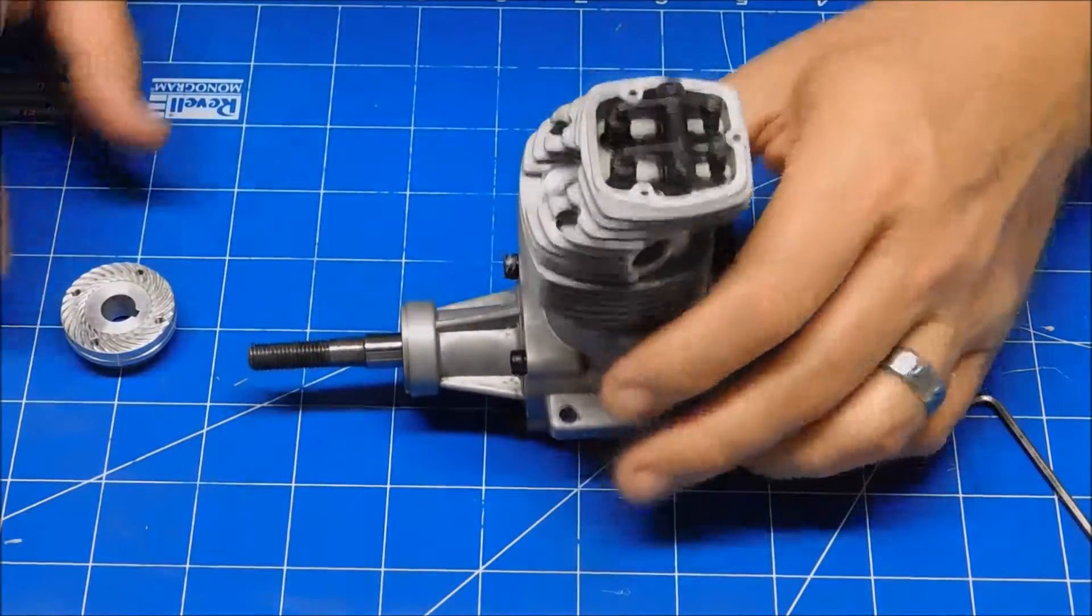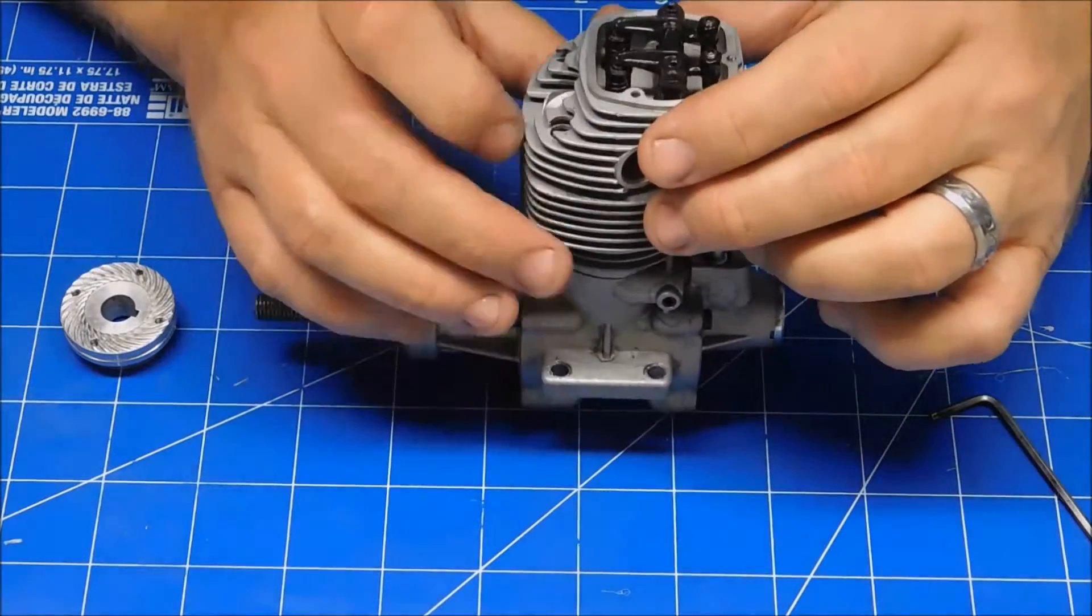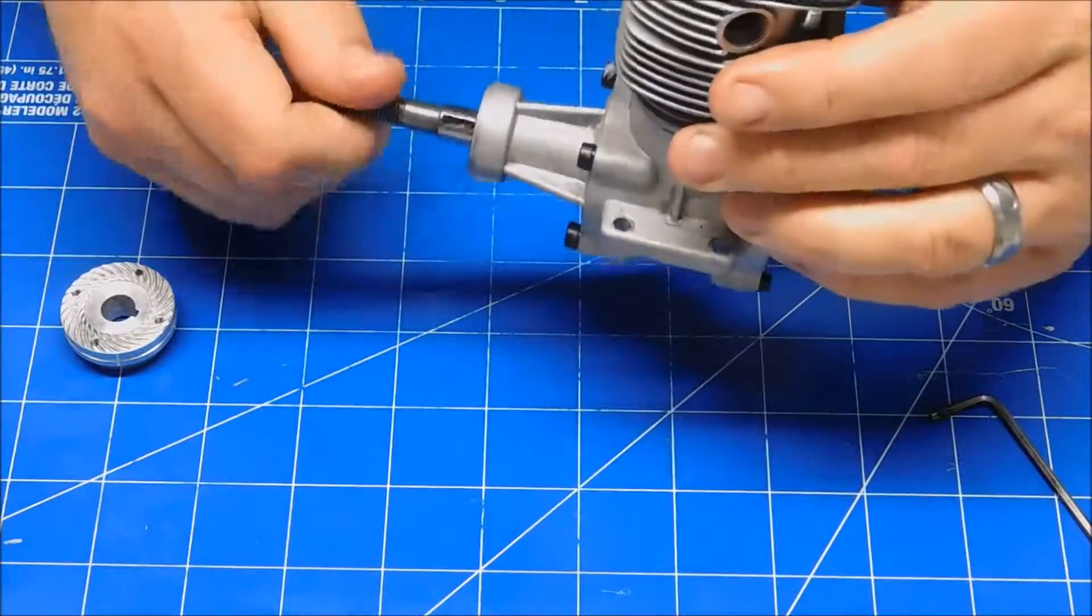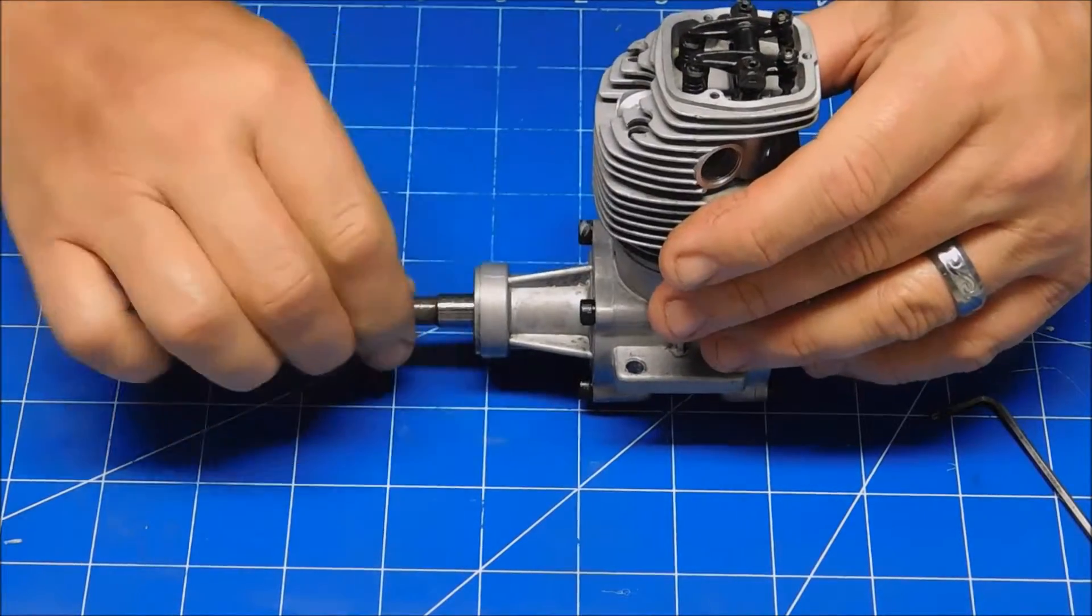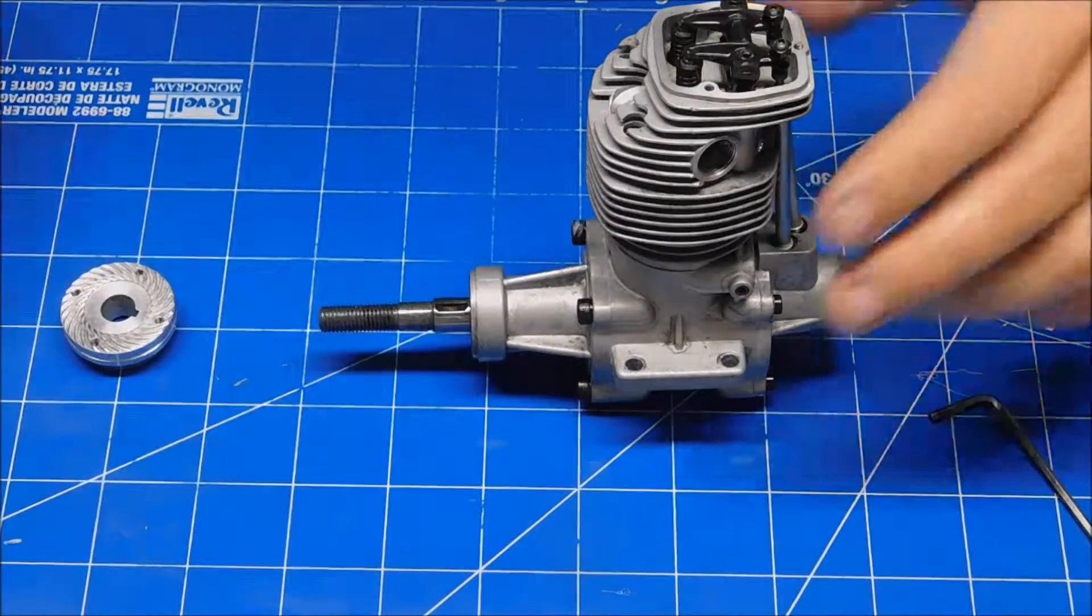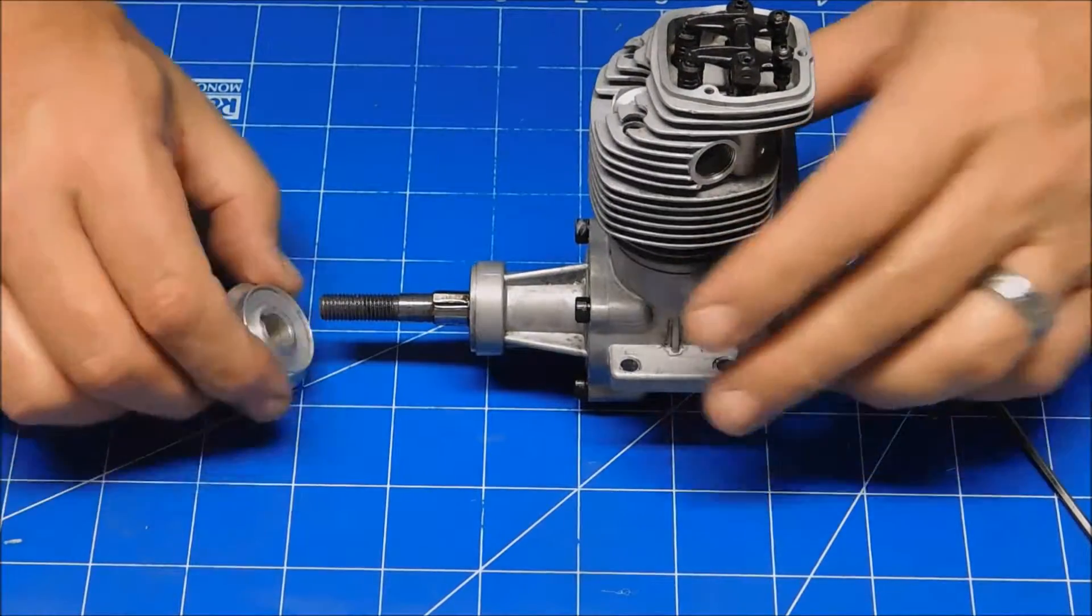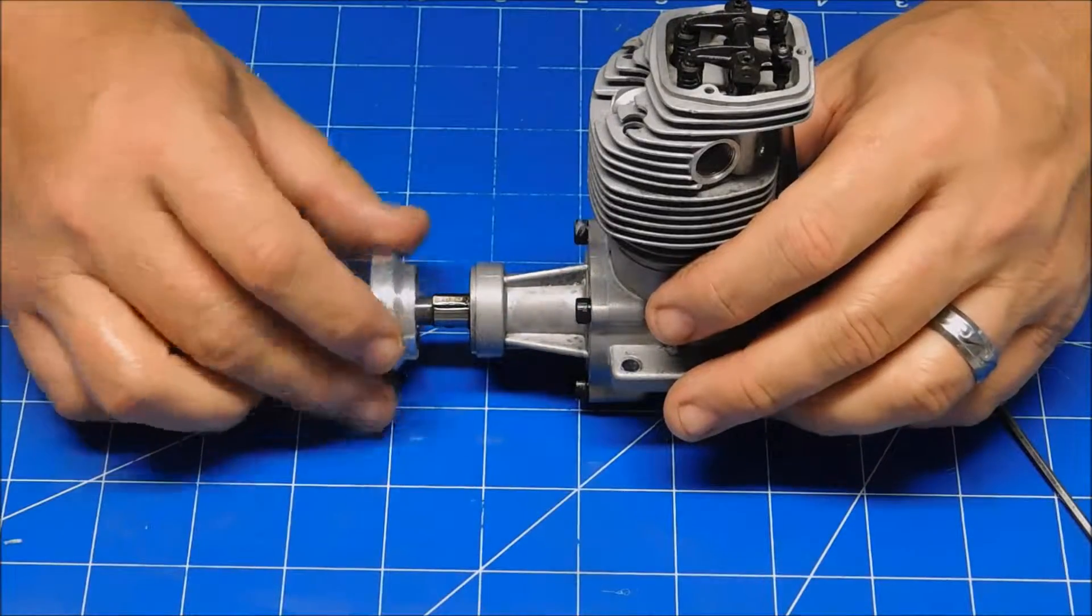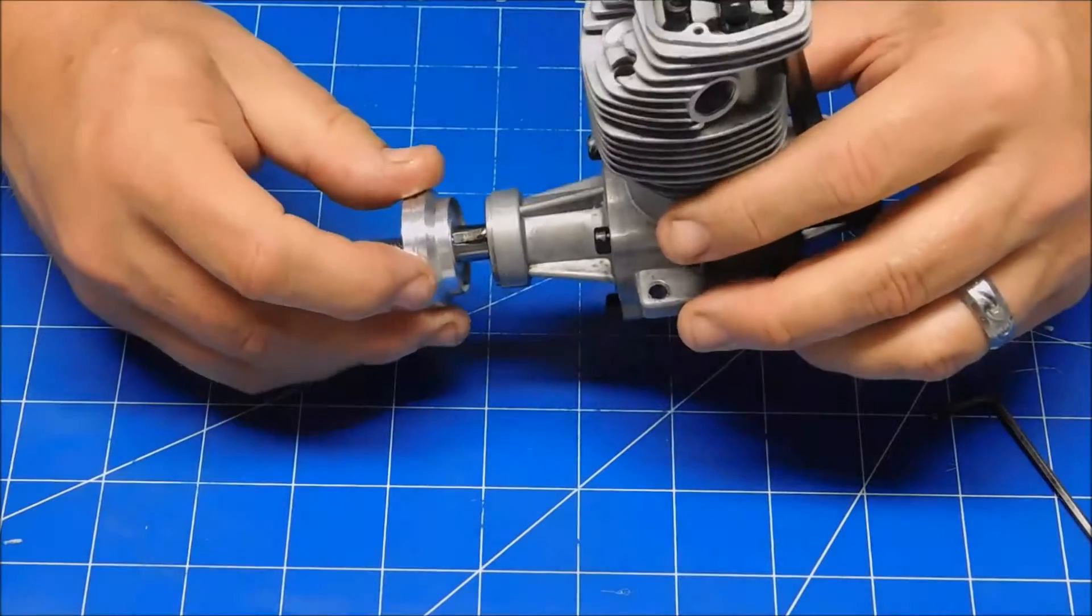Okay. I guess I could install a glow plug now and actually test the compression. Before we do that, let's put our Woodruff key in here. Put a little oil in that guide. Drop our Woodruff key in there. Slide this baby on.